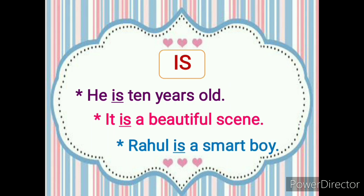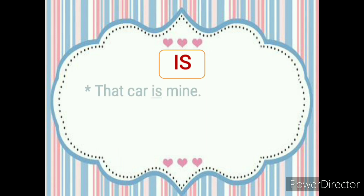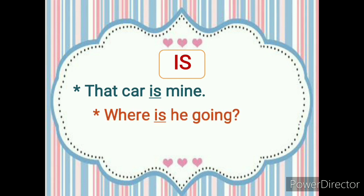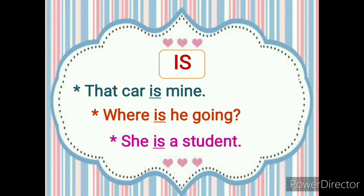Rahul is a smart boy. We are talking about particularly Rahul, so we have used 'is'. That car is mine. Again, we are talking about a particular car, and that is singular, so we have used 'is'. Where is he going? Again, with 'he' we have used 'is'. She is a student. With 'she', again we have used 'is'.